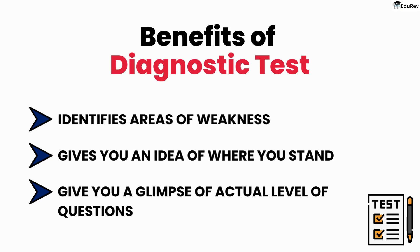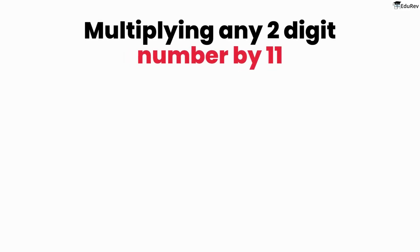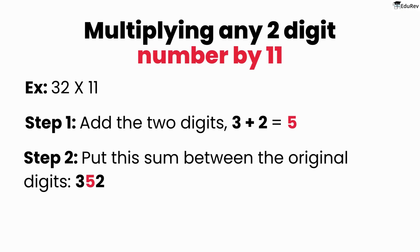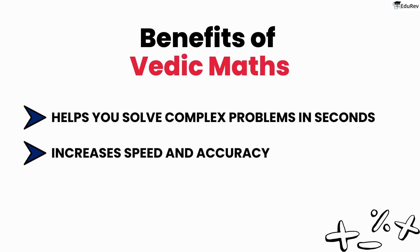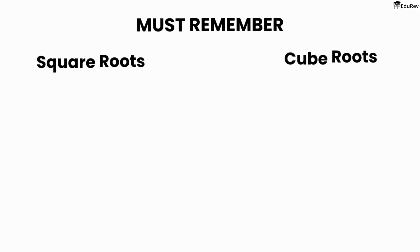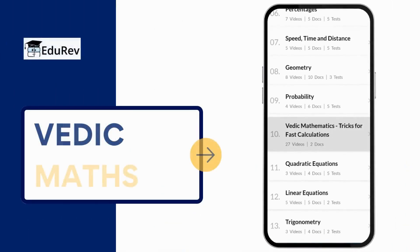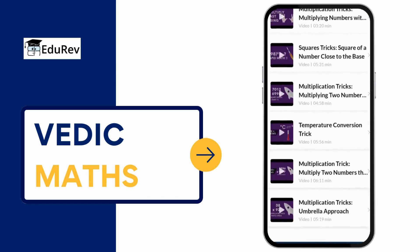Now that we have the diagnostic test out of the way, dedicate your first week to Vedic maths. Let us discuss one of the tricks for multiplying a two-digit number by 11: simply add the digits of the number together and then put this sum between the original two digits. This will give you the desired result. Tricks like these help you solve complex problems in seconds, reducing the time you spend on a question and increasing accuracy. Plus, Vedic maths builds the base for other concepts like ratios, percentages, and averages. It's also important to remember square and cube roots, as these are often used to save time in complex calculations. EduRev offers videos that teach Vedic math tricks from squares to cube roots, enabling you to solve problems faster and more efficiently.